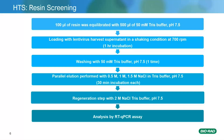This slide shows the protocol for the slurry plate screening. We added 100 microlitres of each resin in the 96-well plate and equilibrated with 500 microlitres of the equilibration buffer, resulting in a phase volume ratio of 5 to 1. Following equilibration, the lentiviral harvest supernatant was incubated for one hour under shaking conditions for the loading step. The unbound impurities were washed away using the equilibration buffer in the wash step. For the elution step, three different salt concentrations were used: 0.5, 1, and 1.5 molar sodium chloride. Finally, the resins were regenerated using 2 molar sodium chloride and the eluted fractions were analyzed by RT-qPCR for estimating the lentiviral physical titer.